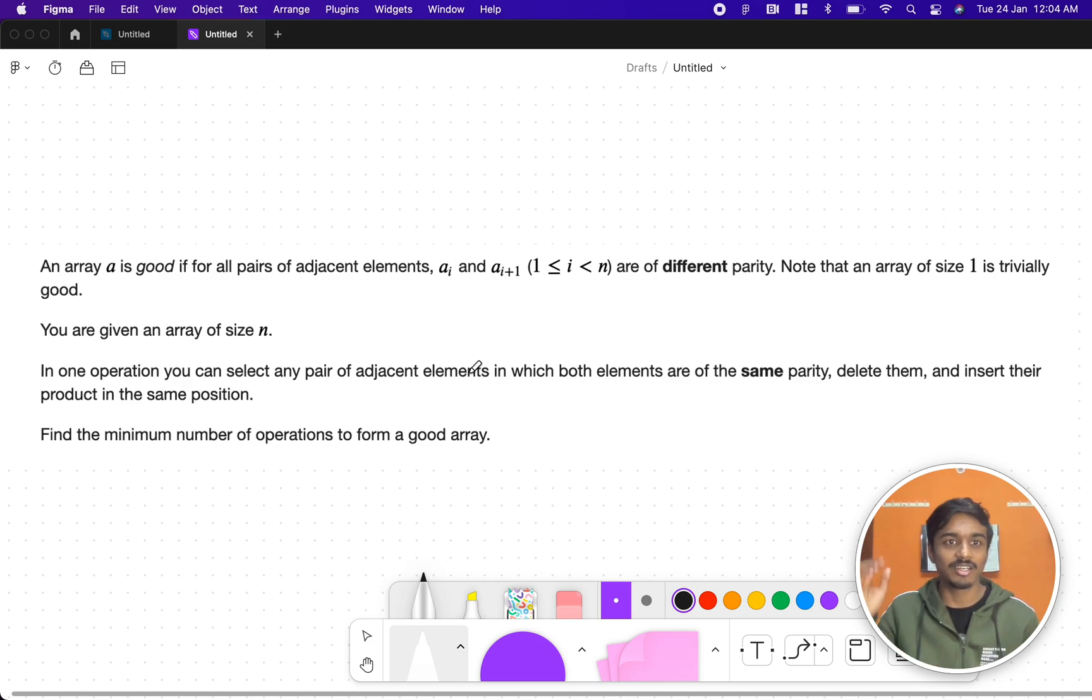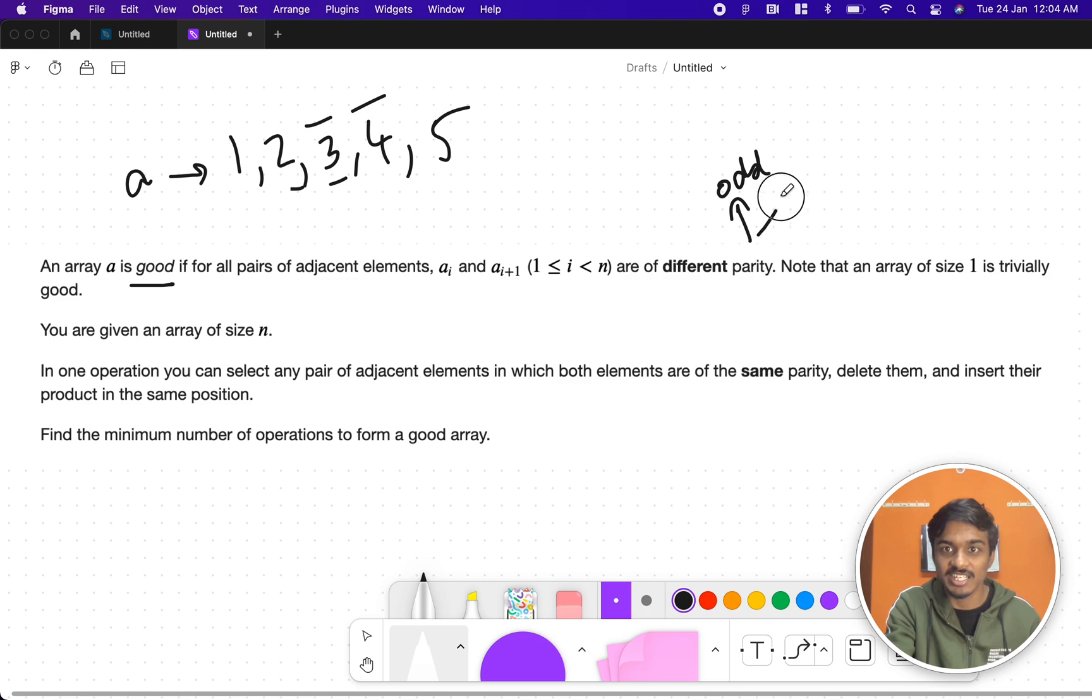They are telling that you have an array a and array a is good if all the pairs of adjacent elements a_i and a_{i+1} are of different parity. We have an array a and all the pairs of adjacent elements are of different parity. What is meant by parity? Parity means either the state is odd or even. So if all the adjacent numbers are of different parity then the array is good.